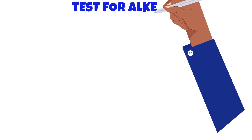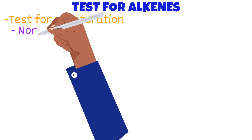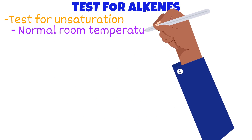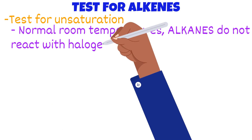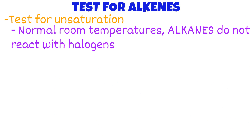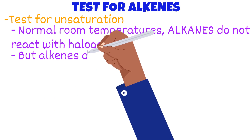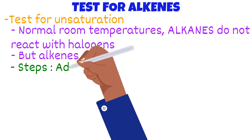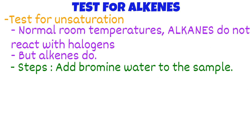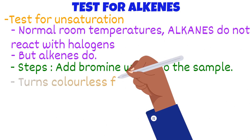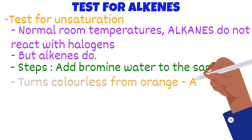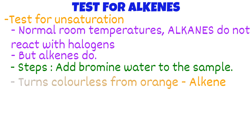If you are given a sample and asked to tell if it was an alkane or alkene, what would you do? Simple — test for unsaturation. Under normal room temperature, alkanes do not react with halogens, which is why UV light was mentioned in the earlier video. But alkenes do. Add bromine water to the sample. If it turns colourless from orange, it is an alkene. If not, it is an alkane.